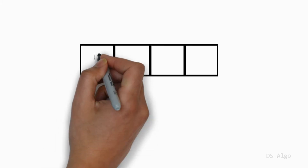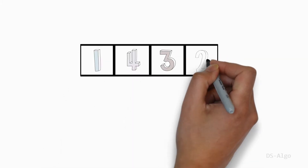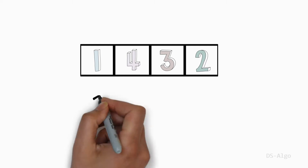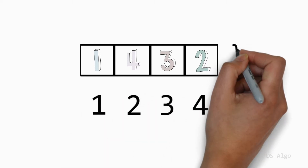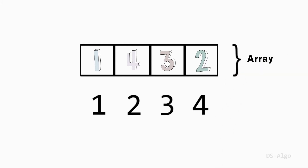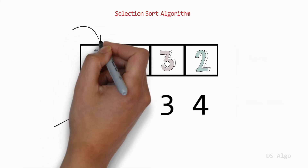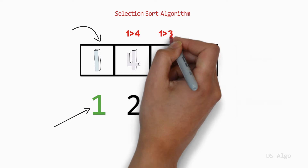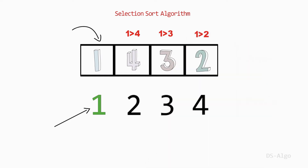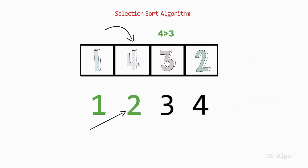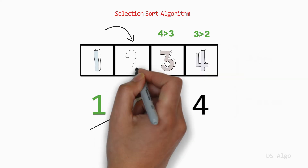Let an array A be [1, 4, 3, 2] and the positions of this array are 1, 2, 3, 4. We can solve this problem by a brute force method. Here I am using the Selection Sort algorithm. We are basically finding the smallest element in the array and exchanging it with the element in the first position, then finding the second smallest element and exchanging it with the element in the second position. We continue this process until done.